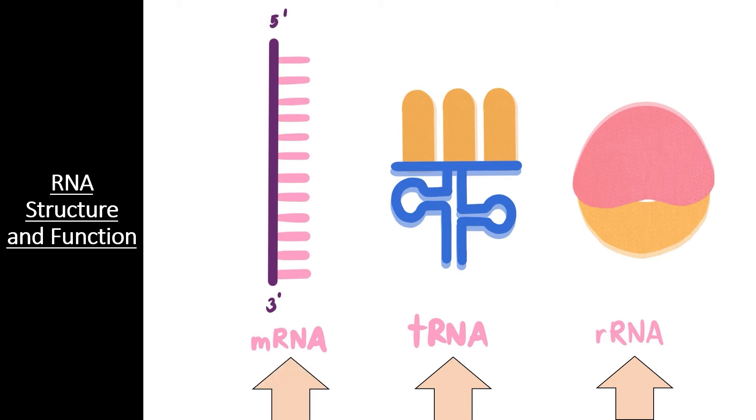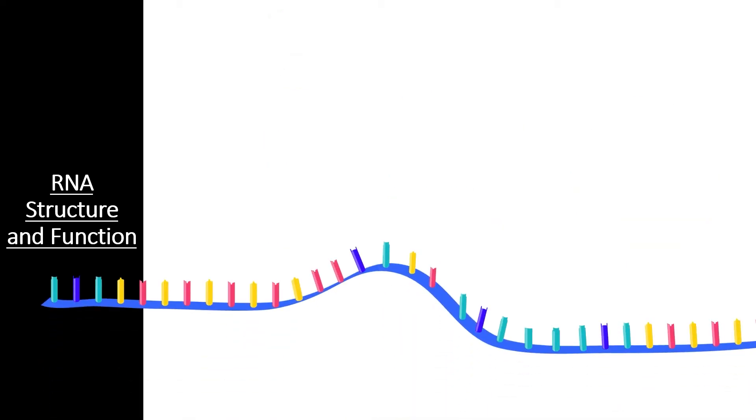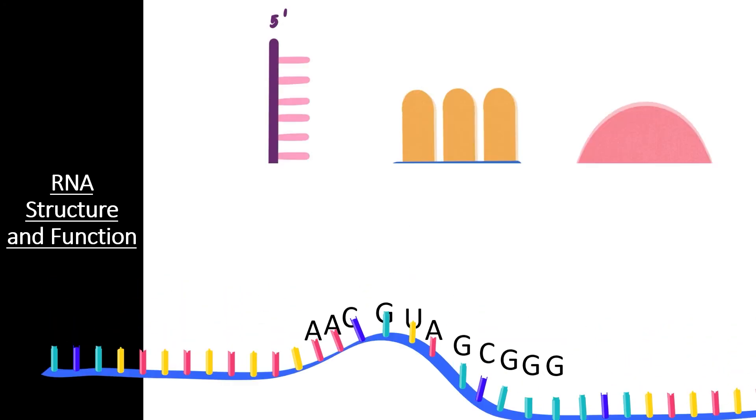Messenger RNA is the form of RNA that actually stores the nucleotide sequence that can be translated into a protein sequence. It carries the genetic message from the DNA in the nucleus to the ribosomes outside of the nucleus to be translated. But mRNA is just one piece of the puzzle.